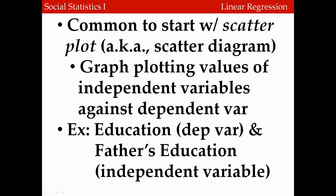A common starting point is to use something called a scatter diagram, or scatter plot. This is a graph that plots the values of the independent variables against the values of the dependent variables. As an example, consider the relationship between respondent's education as a dependent variable and father's education as an independent variable for 100 cases from the General Social Survey.